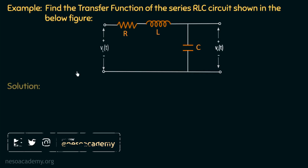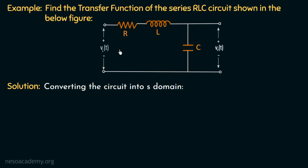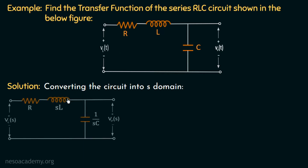Moving on to the solution, we know that if we want to calculate the overall transfer function of an electrical network, we first have to convert that network into its S domain. So if we convert this network into its equivalent Laplace domain, the network will look like this: the input voltage is Vi, the impedance of the resistor is R, the impedance of the inductor is SL, and the impedance of the capacitor is 1 over SC.